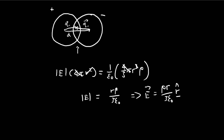So r is a unit vector, so we can actually write the electric field into something like this. This r vector is the vector from the center of the sphere all the way to the point that we're trying to evaluate the electric field — and this is going to be inside of the sphere. This formula only works when you're inside of the sphere.